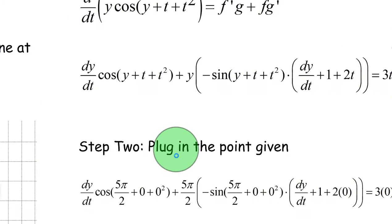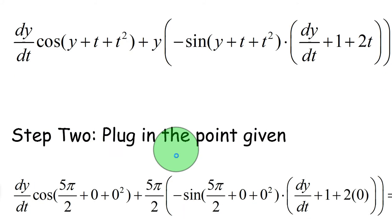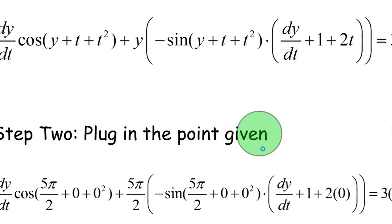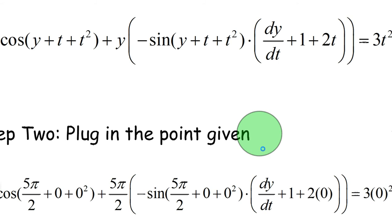So now we're going to do step 2, which is plug in the point that they gave us. Because, so think about when you find the slope of the tangent line, you take the derivative, right? And with implicit, you actually have to plug in a point.